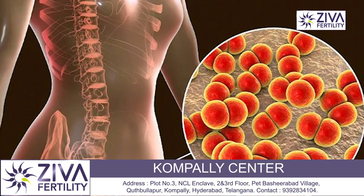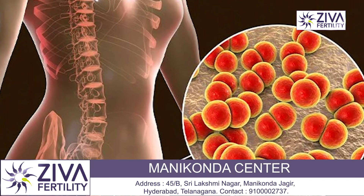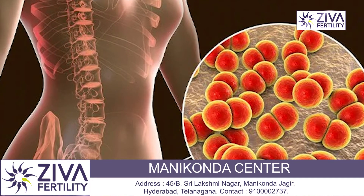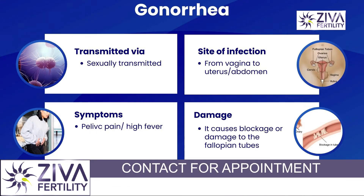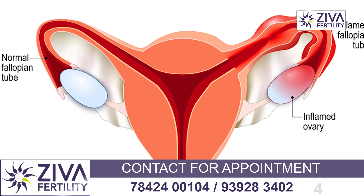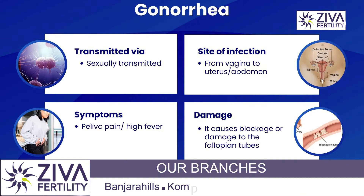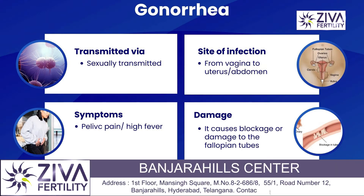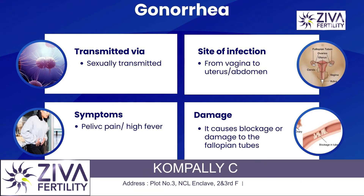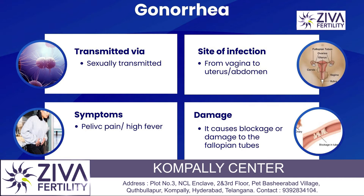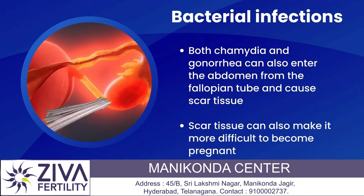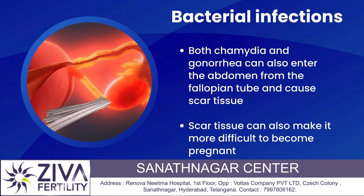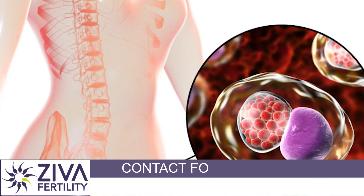Next is gonorrhea. Gonorrhea also affects in a similar way through intercourse, but it can also cause serious issues in the fallopian tubes. Although chlamydia may not show too many symptoms, gonorrhea manifests itself in the form of pain and high fever, and it can damage tubes as severely or even more than chlamydia.